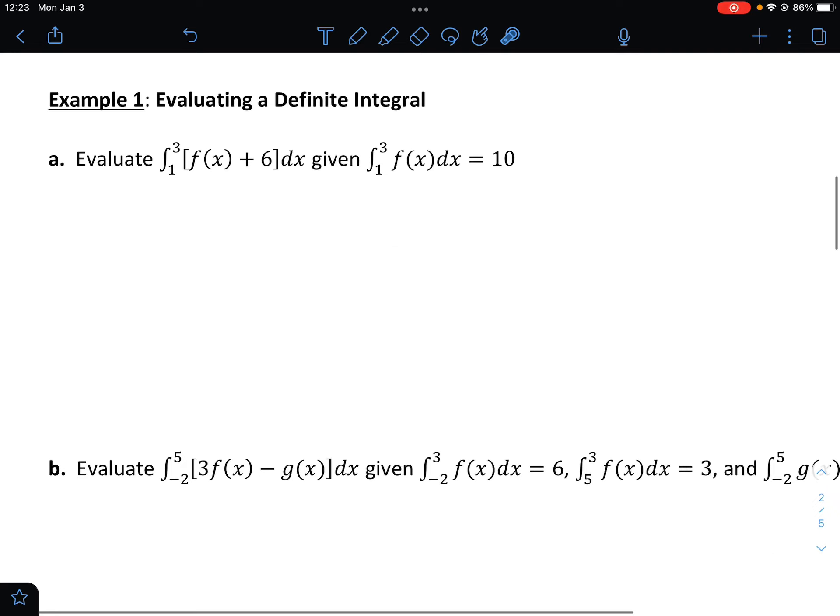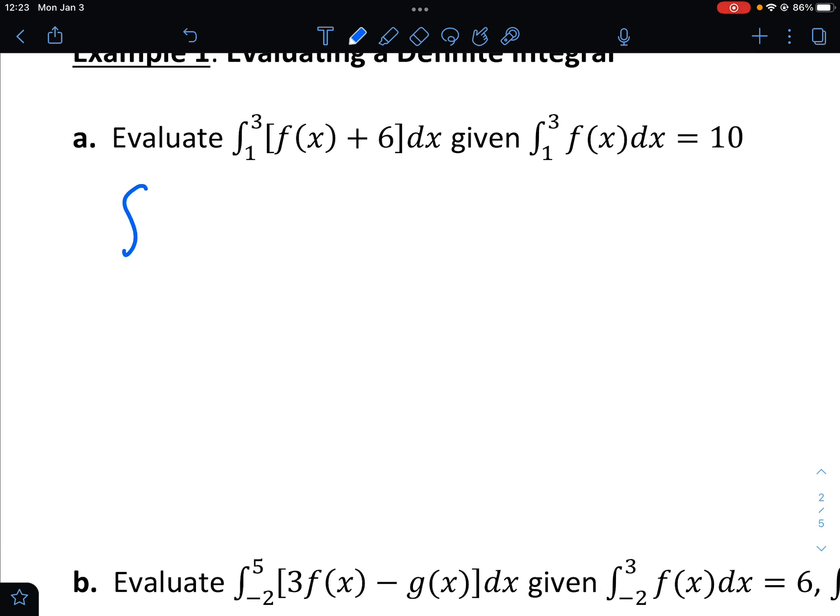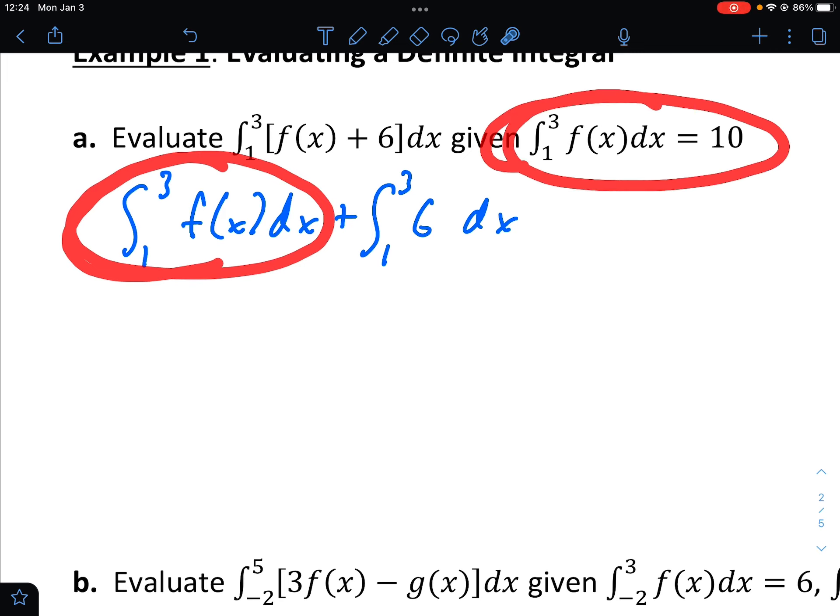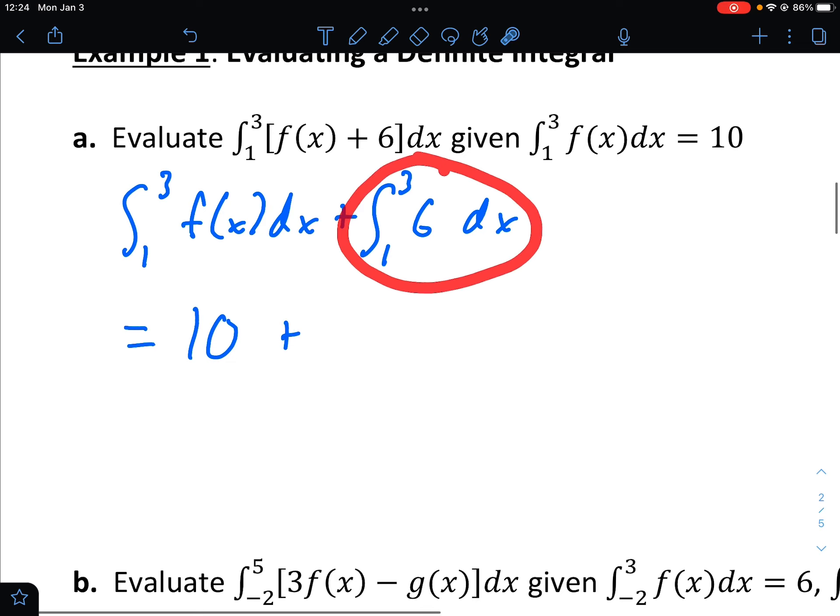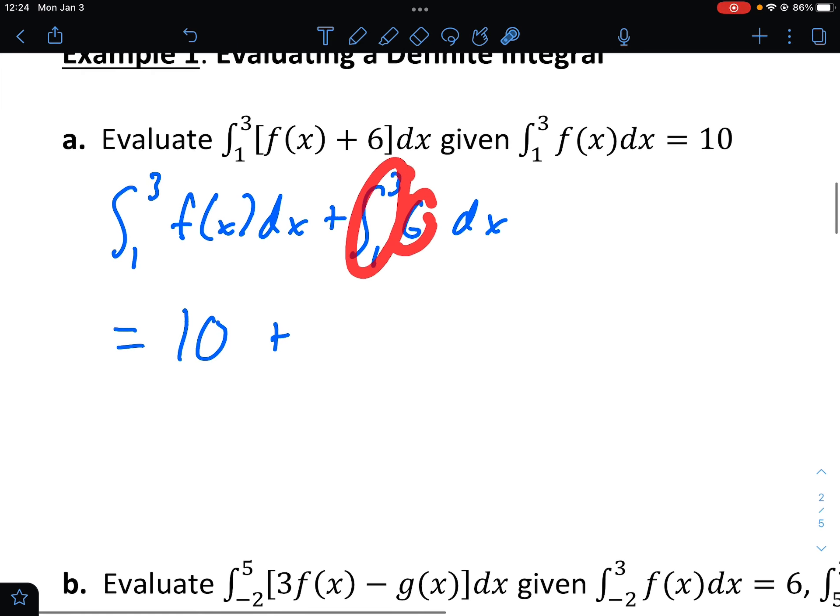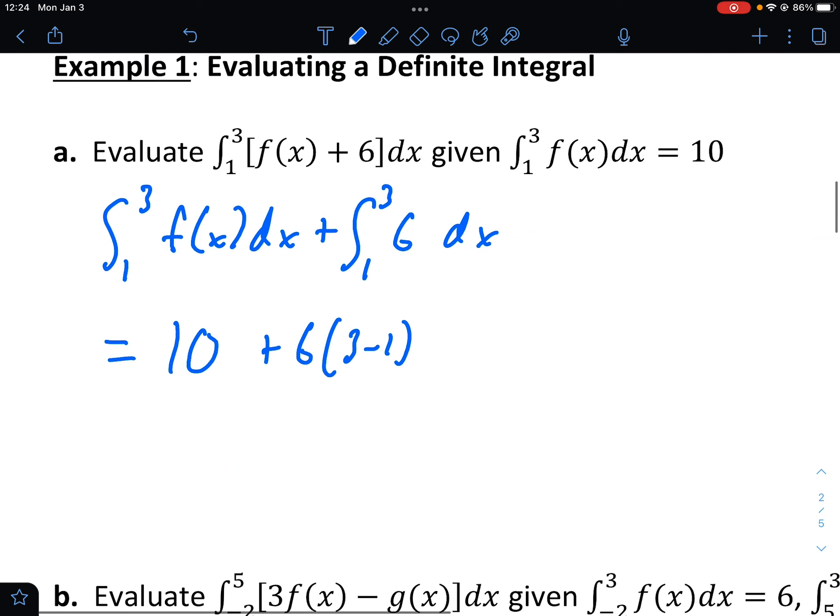So this is going to be that additive property for integrals. We're going to split this up into two separate integrals. And this first integral, we already know what that is. It's 10. Plus, this, if you remember from our video about geometry, is just a rectangle of length 6 and width 2. So 6 times 3 minus 1, which is 6 times 2, or 12. So this would be 22.